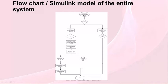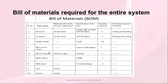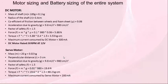This is the bill of materials which we are going to use — a reservoir container and other components. This is the motor sizing and battery sizing of the entire system. We are taking the mass of the shaft as 0.1 kg, radius as 0.4 cm, coefficient of friction as 0.06, and acceleration due to gravity among other parameters. We have calculated the maximum current consumed by both the DC and servo motors.